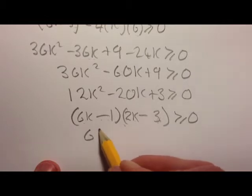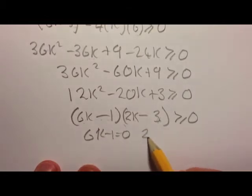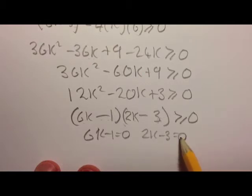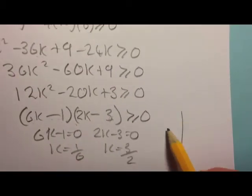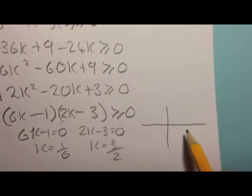We're solving an inequality, so we get the two critical values first. From this, 6k minus 1 equals 0 or 2k minus 3 equals 0. So k equals 1/6 or k equals 3/2. But that's not solving the inequality.